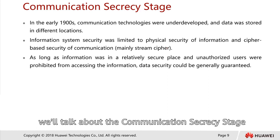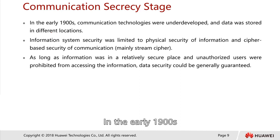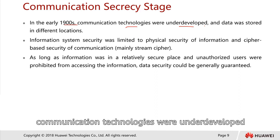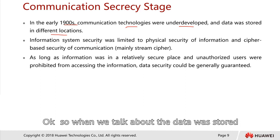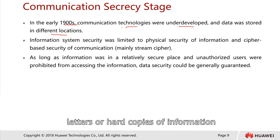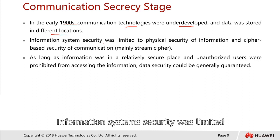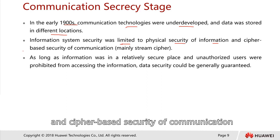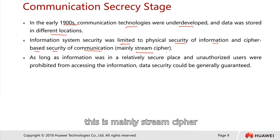Next, let's talk about the communication secrecy stage. In the earliest 1900s, communication technologies were underdeveloped and data were stored in different physical locations — letters, hard copies, pictures stored in physical locations. Information system security was limited to physical security of information and cipher-based secure communication, mainly stream cipher.